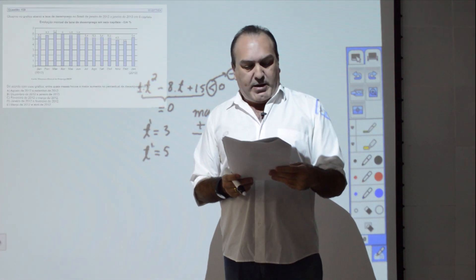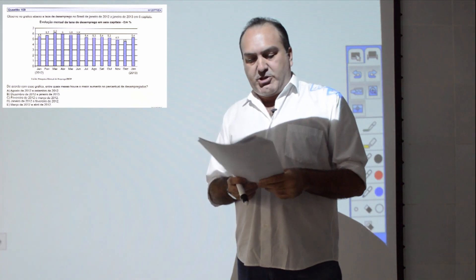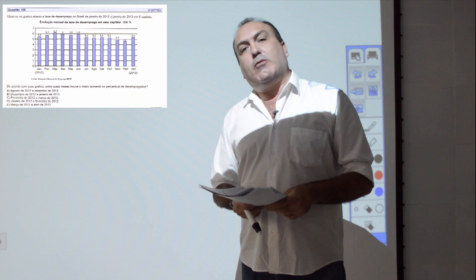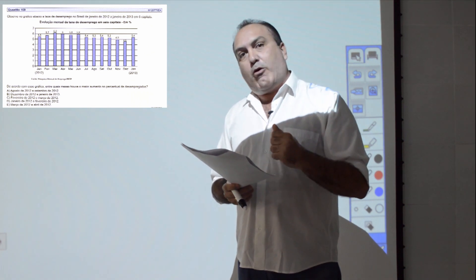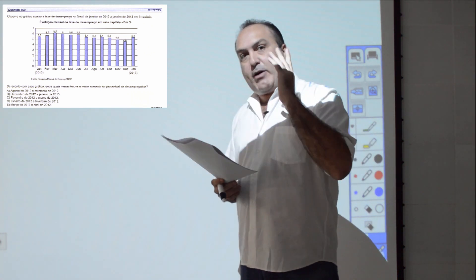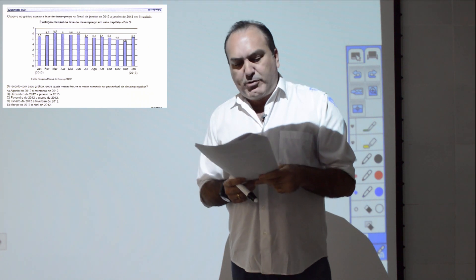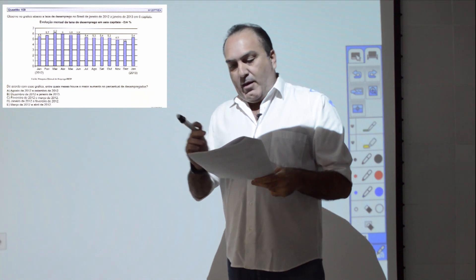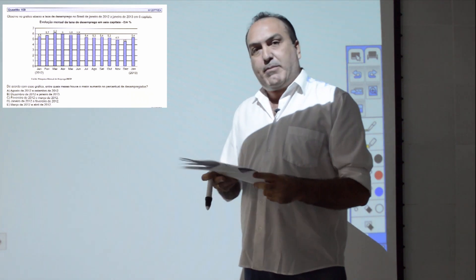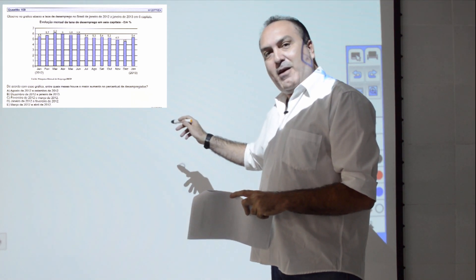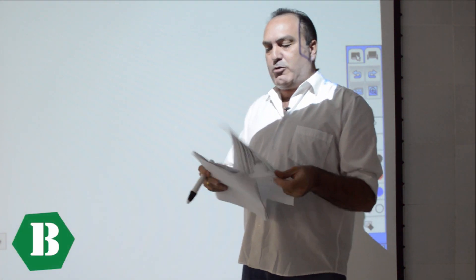Questão 169: análise de gráfico de percentual de desempregados por mês. A questão pede entre quais meses houve o maior aumento do percentual. Não basta olhar o ponto mais alto — é preciso ver a maior discrepância entre barras consecutivas. Entre dezembro e janeiro, o aumento foi maior do que nas outras comparações. Item B.